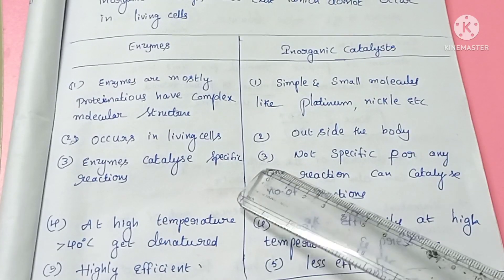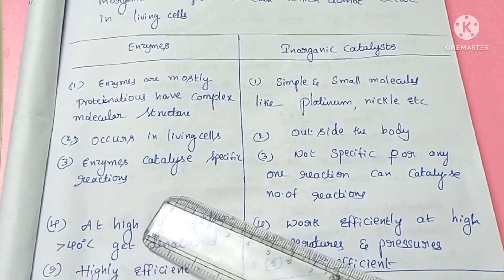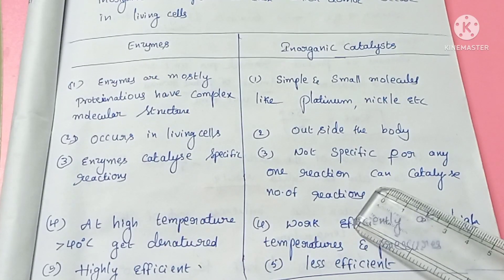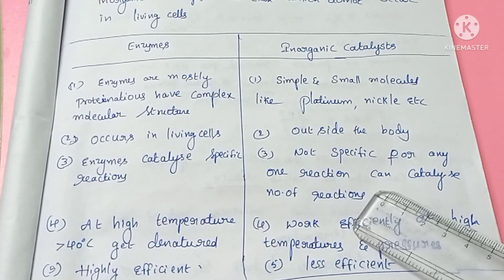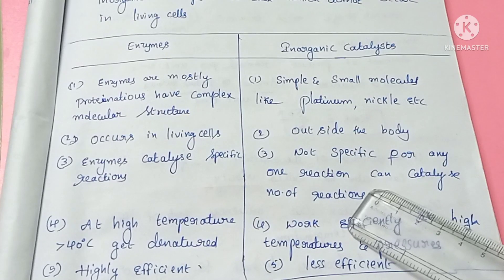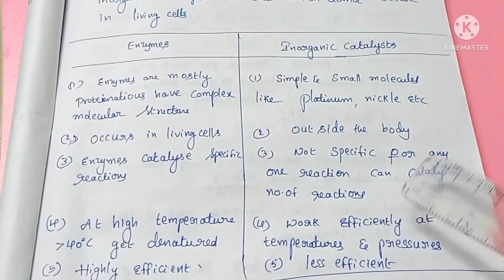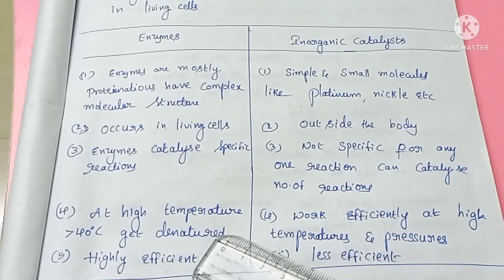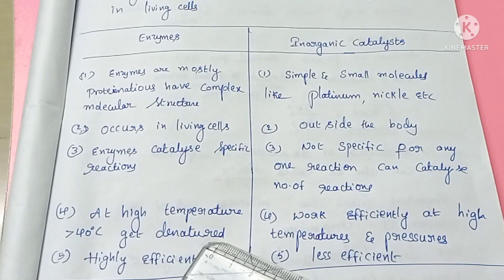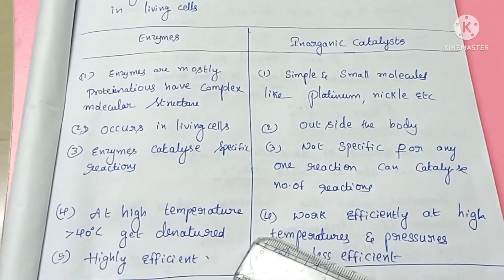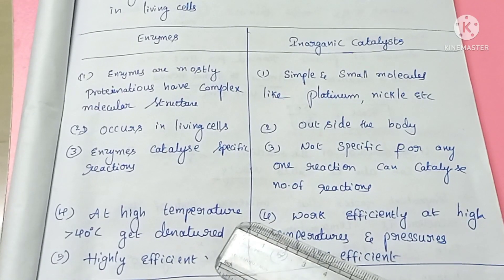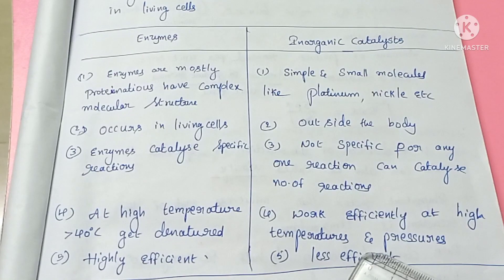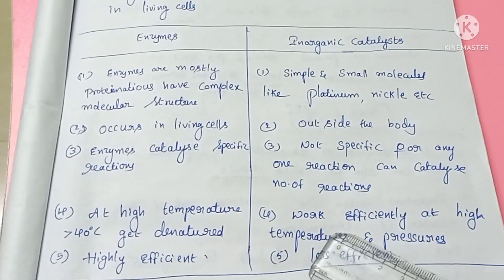Enzymes carry out very specific reactions inside the body, whereas inorganic catalysts are not specific to any one reaction. At high temperatures above 40 degrees centigrade, enzymes will denature — the delicate hydrogen bonds break and the enzyme becomes inactivated, which is called denaturation. In contrast, inorganic catalysts work efficiently at high temperatures and high pressures.